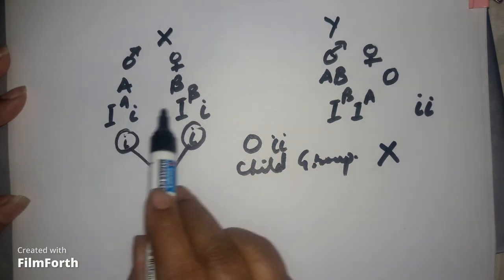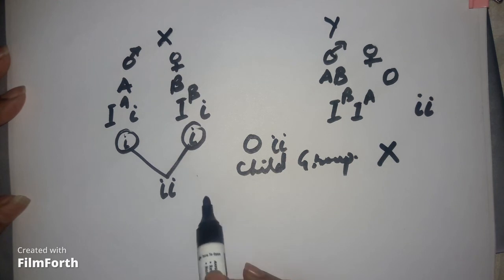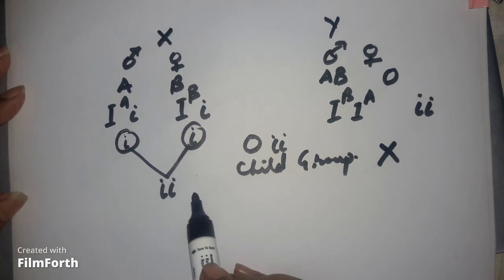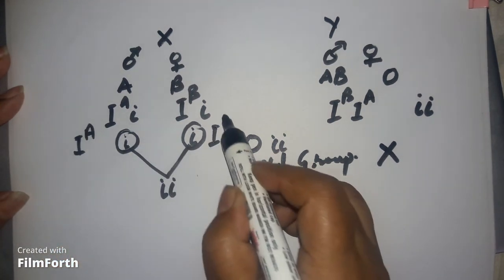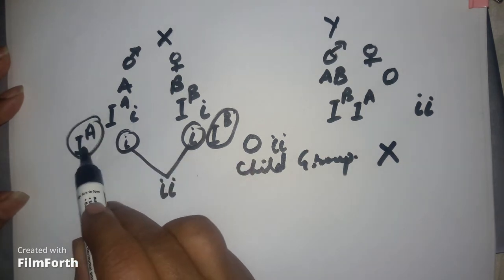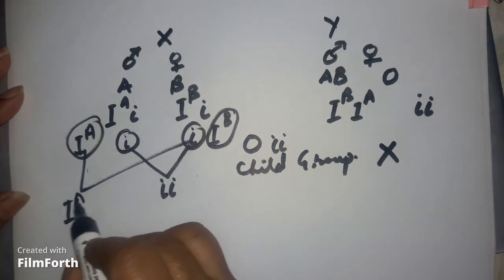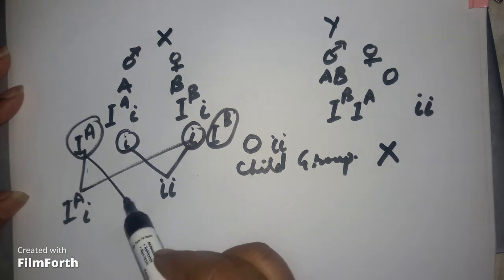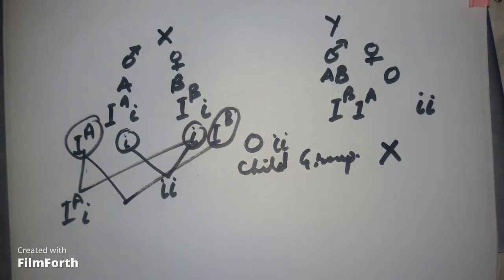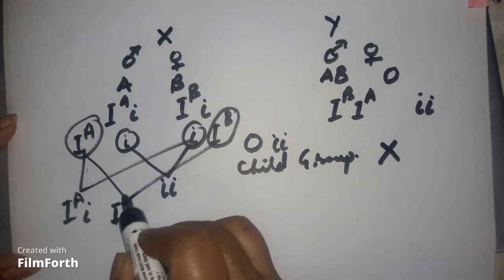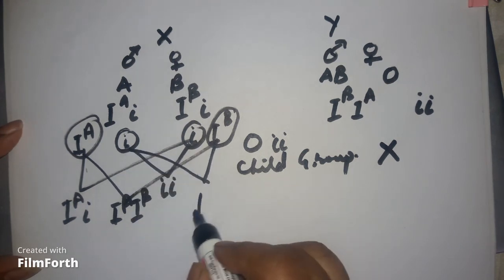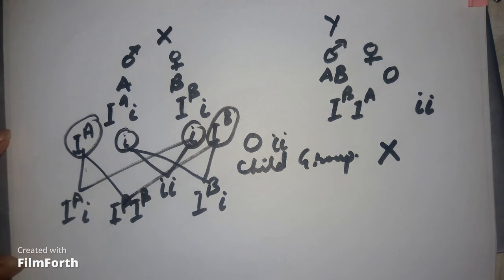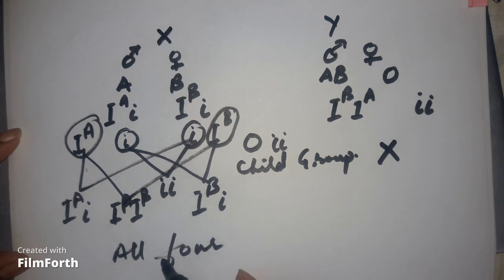Another question asked is: what other allelic combinations are possible in the future children of this couple? They can have various types of gametes, and if different gametes fertilize, the child will have A blood group or other combinations. In fact, in the future children of this couple, all four blood groups are possible.